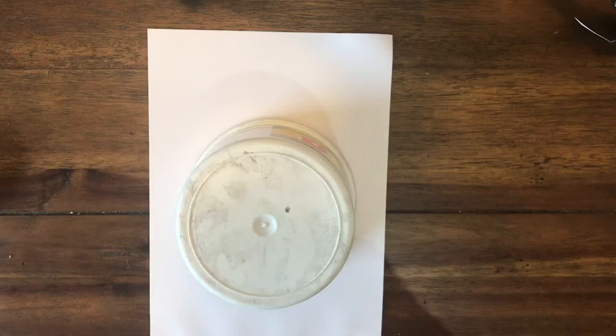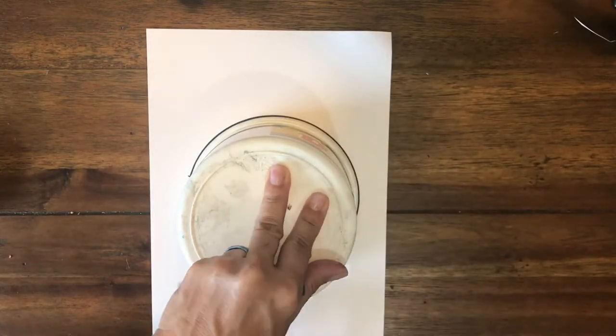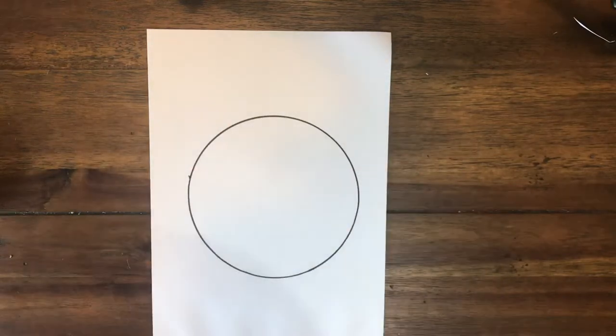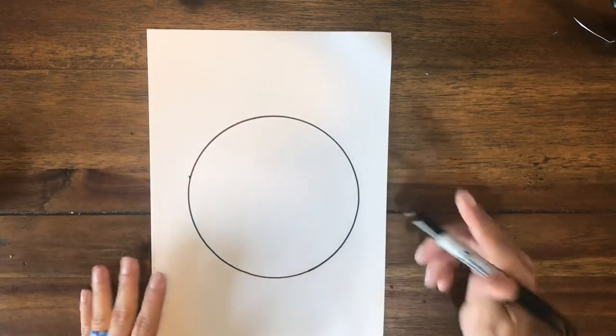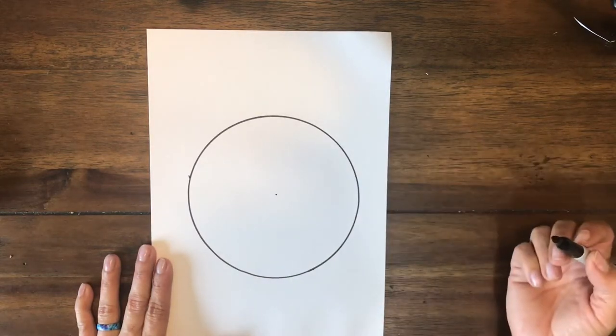Hey guys, I'm back. I've got my paper, my pen, and I found a little bucket that I'm gonna trace around. You can use pencil, pen, whatever you have. Once you get your circle traced, go ahead and put a dot in the center.